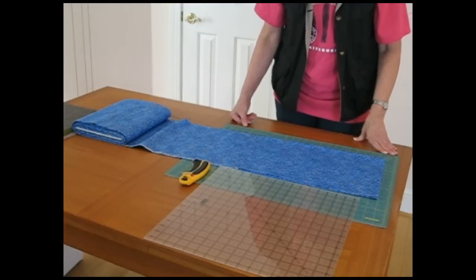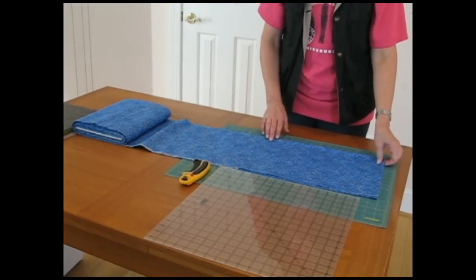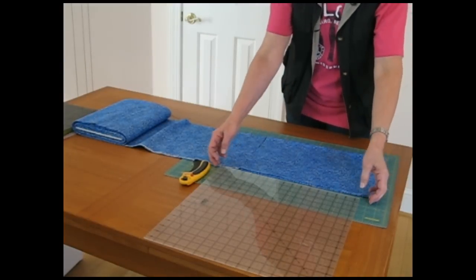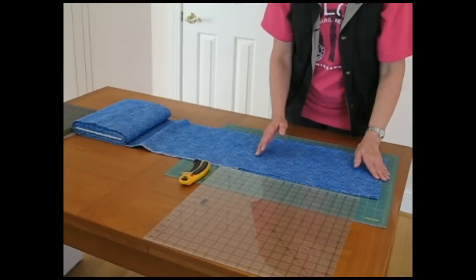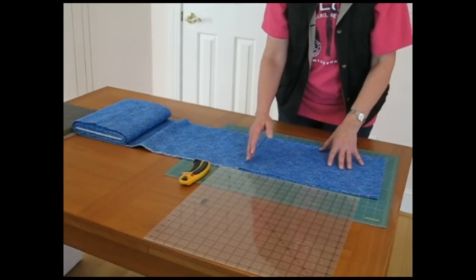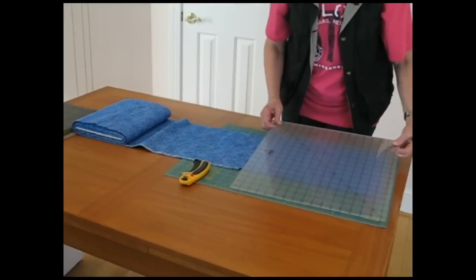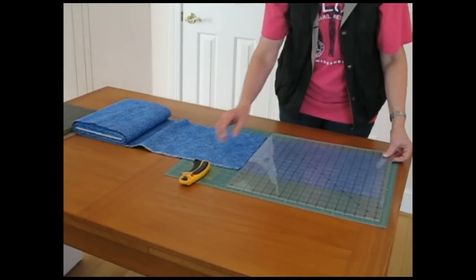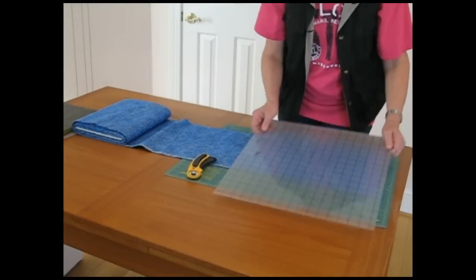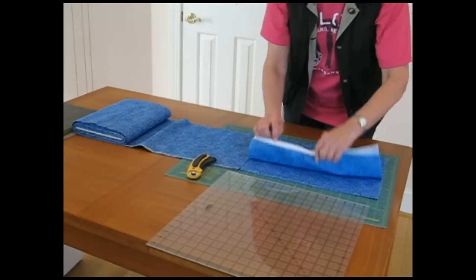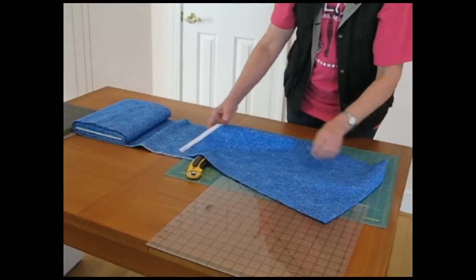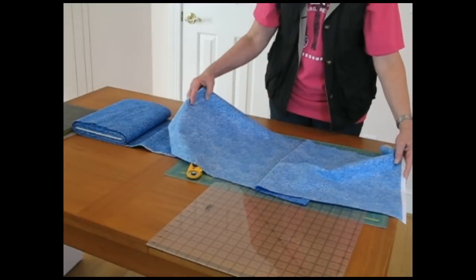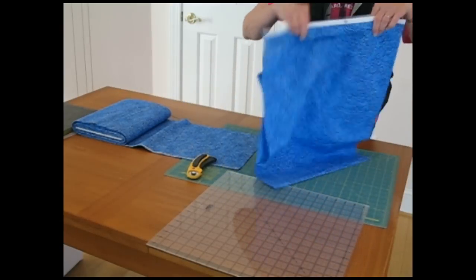The first step in making bias binding using the AccuQuilt Go die cutting system is to cut a 16 to 18 inch width across your fabric. I use my large ruler and my rotary cutter and I cut a width of fabric. You can see this is 40 inches by 16 inches.